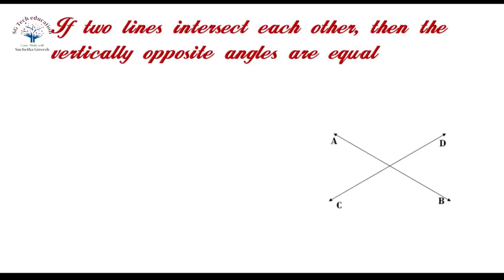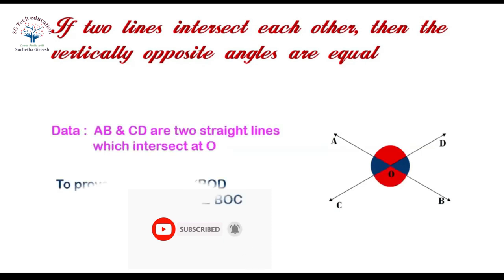Let AB and CD be two lines intersecting at point O, forming four different angles. Angle AOC and angle BOD, angle AOD and angle BOC are two pairs of vertically opposite angles. Here we have to prove angle AOC equals angle BOD and angle AOD equals angle BOC.